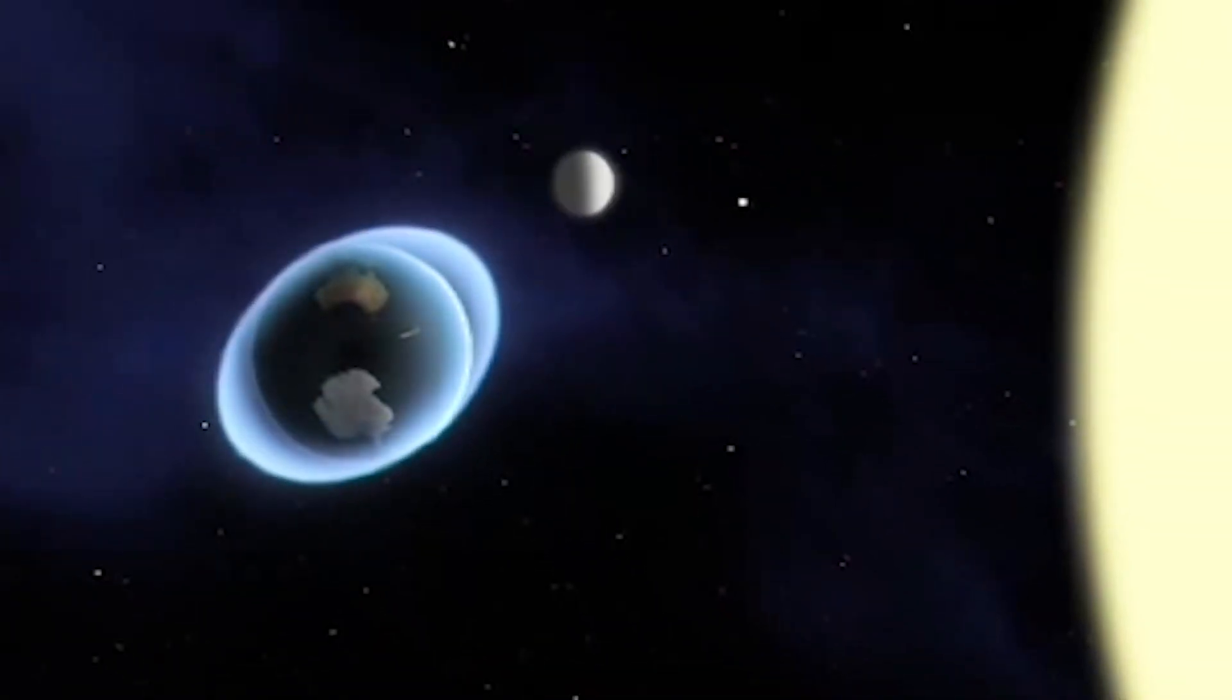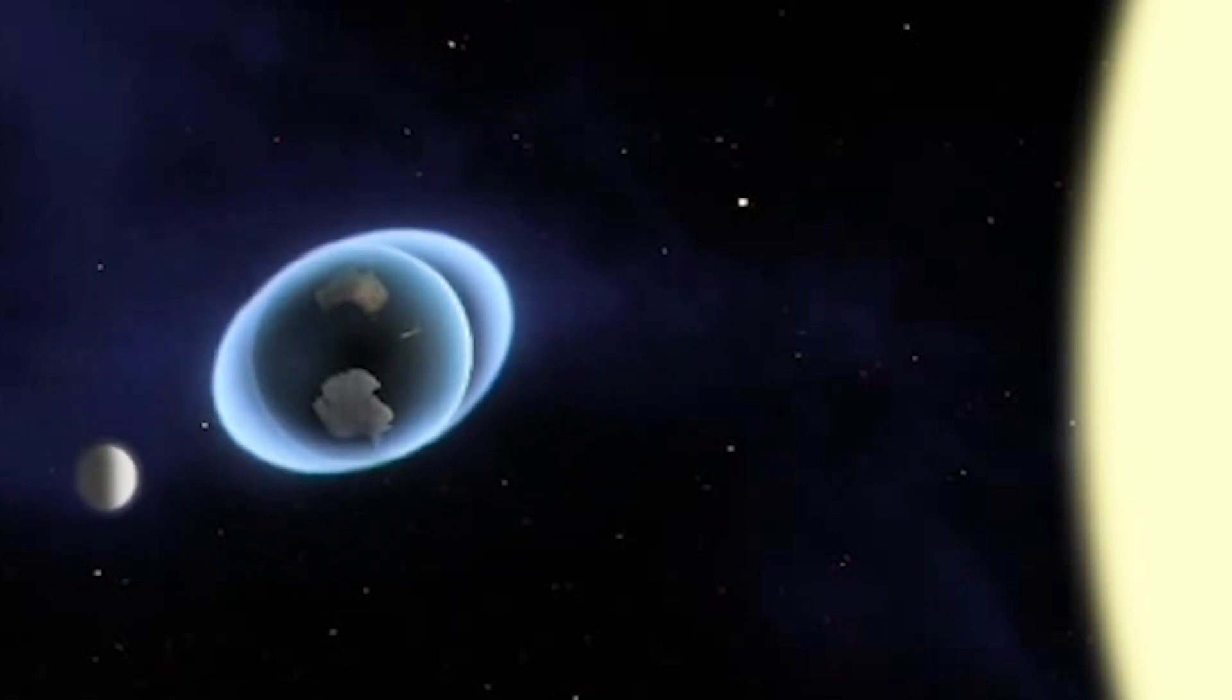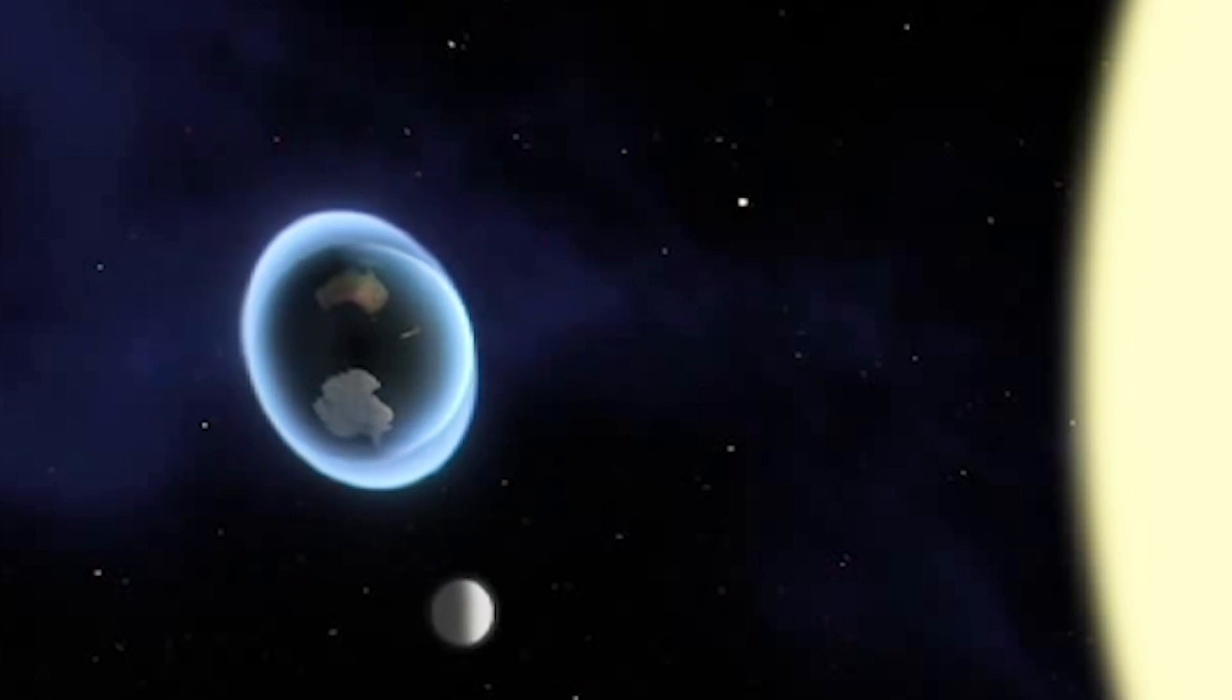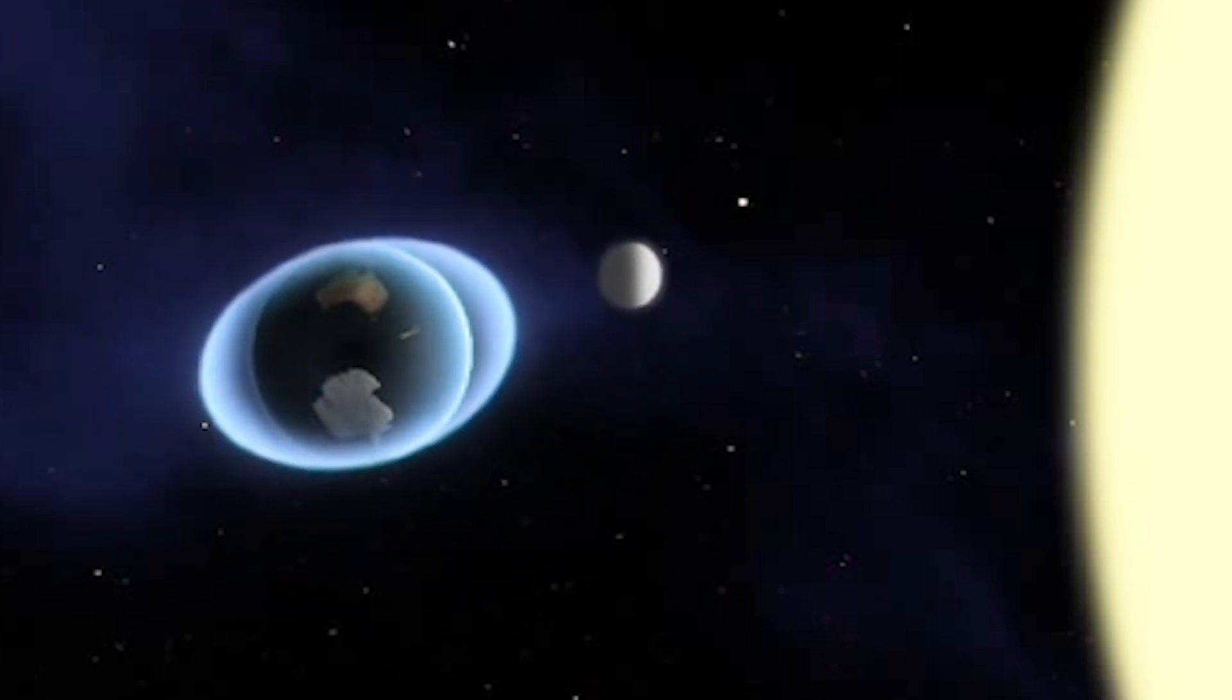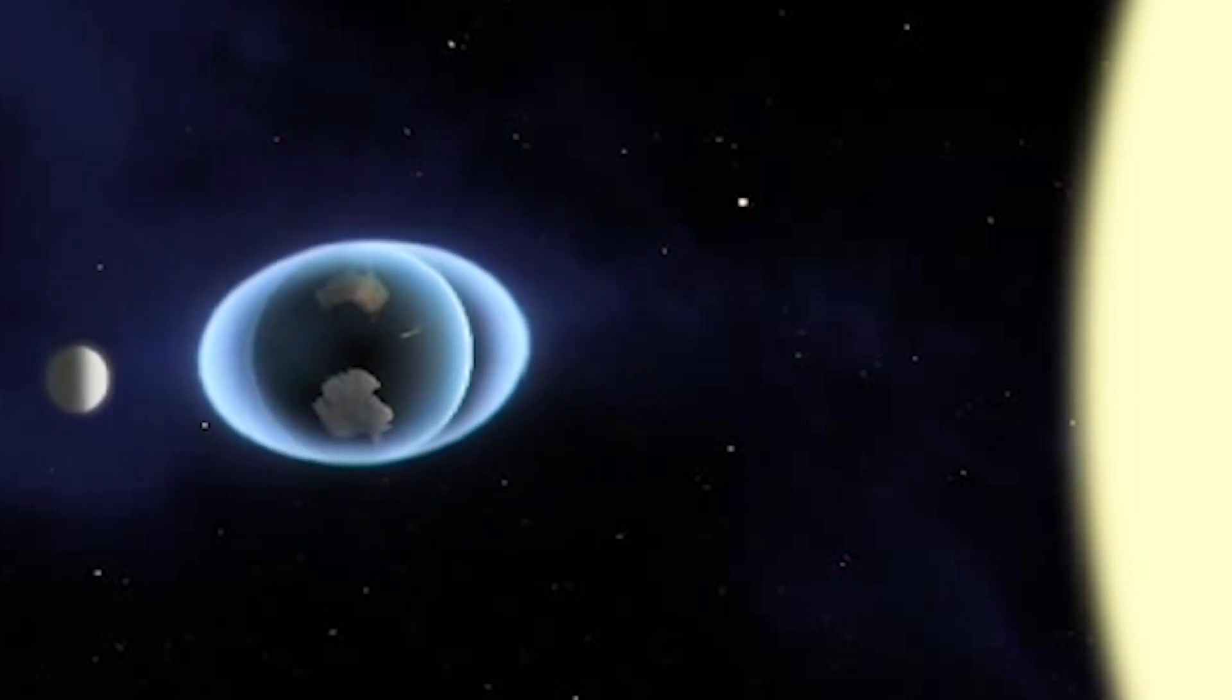Based on the rotation rates or orbits, tidal interactions can result in bodies pushing each other away, for example between the Earth and the Moon, or towards each other, like Kepler 1658 b and its star.